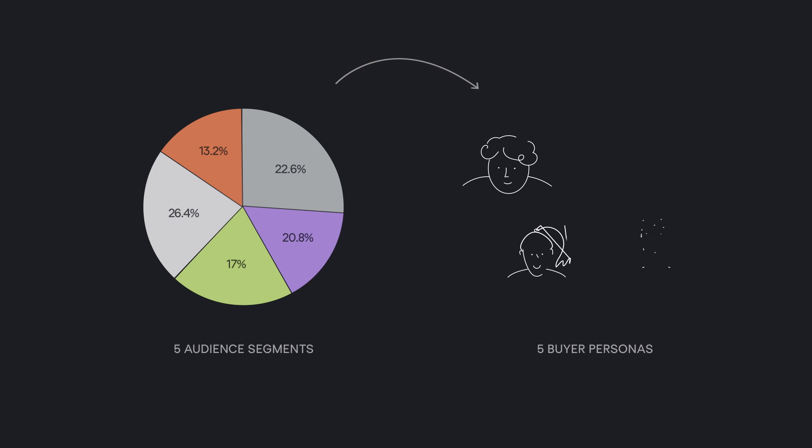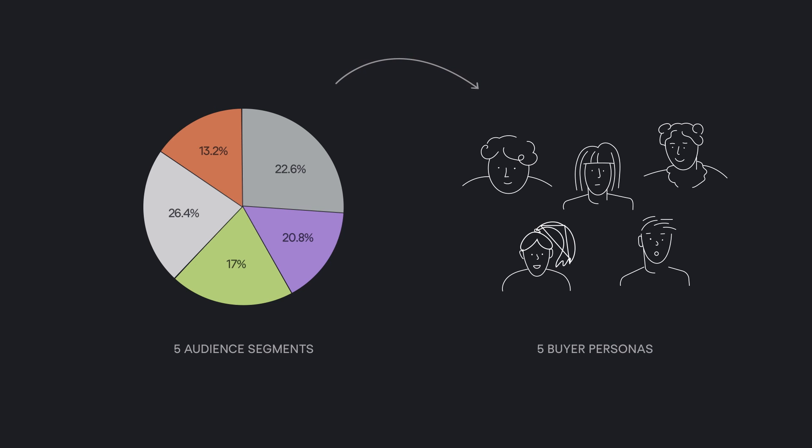SaaS bio personas are the next step to audience segmentation. Made out of complex user data, they take the form of real people to highlight specific details and important features of the group. It helps product teams to create empathy with users — well, at least that's how it's supposed to be.